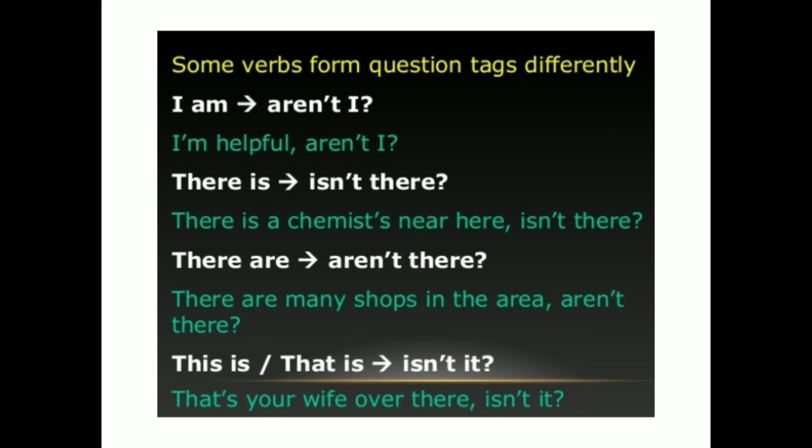And the last special form: 'this is' or 'that is' uses 'isn't it?' as the question tag. For example: 'That's your wife over there, isn't it?'